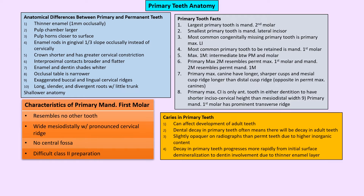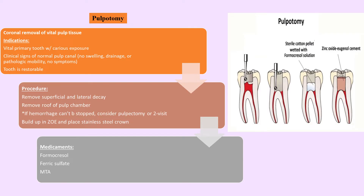For the primary mandibular molar, there is a very prominent transverse ridge. Class 2 preparations are difficult, and the pulp horns are very high, so chances of exposure are very common.